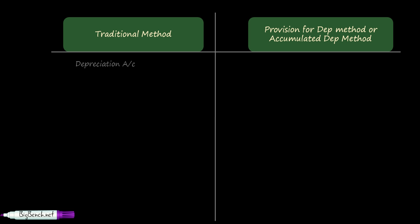Under the traditional method, the journal entry is: depreciation account debit, to asset account. If the amount of depreciation is ₹5,000, we debit depreciation account — a nominal account, debit all expenses and losses — and credit asset account, a real account, credit what goes out. You may wonder: the asset is not going out of the factory, so why credit the asset account? It is because the value of the asset is reduced over time due to wear and tear.